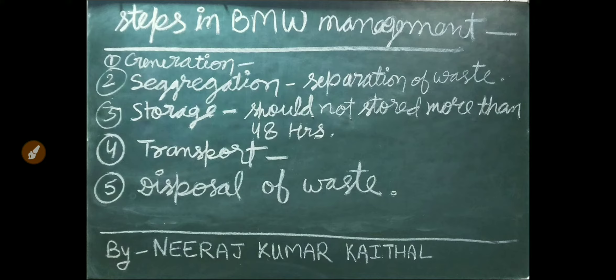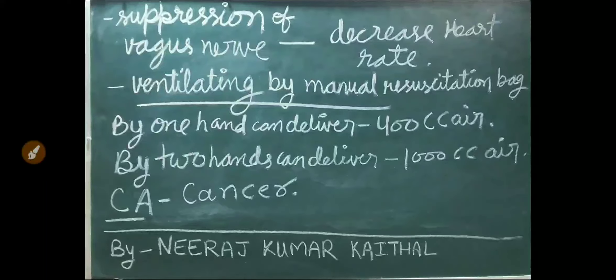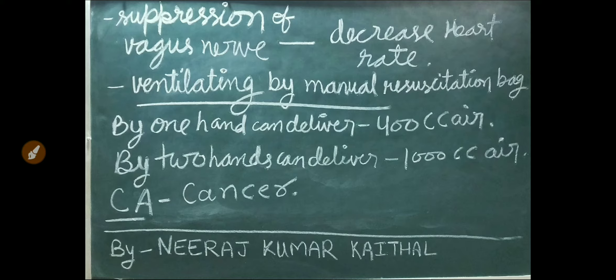Biomedical waste management steps continue: 4. Transportation, 5. Disposal of waste. Stimulation of the vagus nerve decreases heart rate. Ventilating by manual resuscitation bag: if done with one hand, it can deliver 400 cc of air; if done with two hands, it can deliver 1000 cc of air.